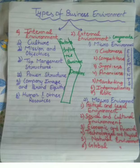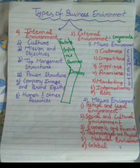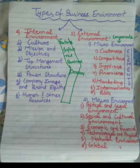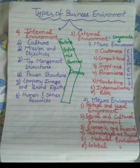In external, we will study two components: micro and macro. In micro, we will further study many elements like customer, competitors, supplier, financials, marketing, intermediary, and public. In macro environment, we will study political and legal environment, social and cultural, technological, physical, economic and financial, natural environment, and global environment.